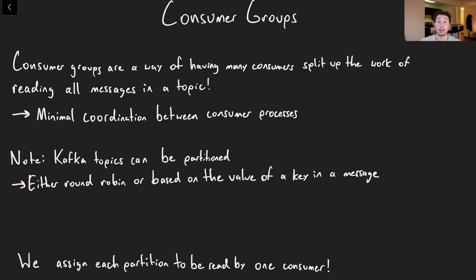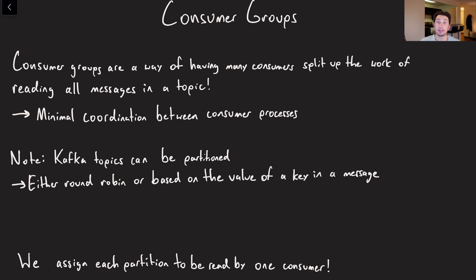Another concept in Kafka is known as consumer groups. Consumer groups are a way of partitioning out our consumers so that we can read from every single partition in a topic that we care about. Typically, if we wanted to ensure that every consumer was reading each message only once, we would have to do a lot of coordination between each consumer — every single one would have to say they're reading this particular message so others can't. We've seen that in other systems like Photon, where everyone's going to the ID registry every single time they're handling an event, and that can really slow things down.